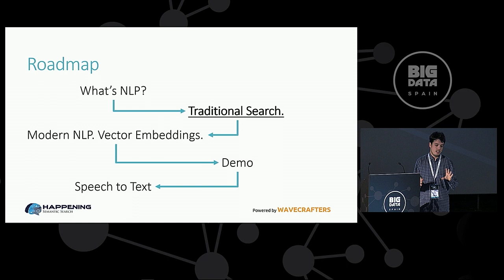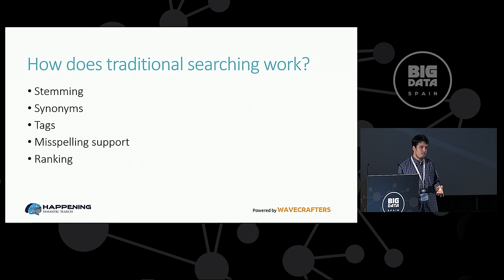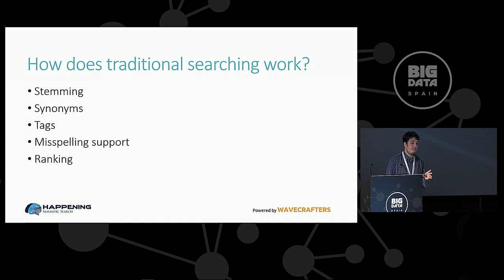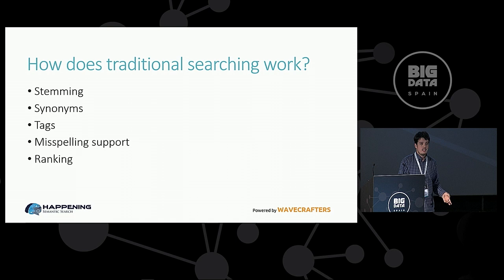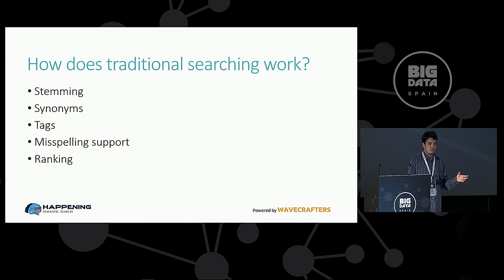Now we are going to center on one of those use cases, which is searching in a database. Right now, searching is like an eight-year-old — they can distinguish words but they don't know what they mean. They do some tricks to palliate that, for example they use stemming, which means that 'buying' and 'buy' are interpreted as the same word. They sometimes use synonym dictionaries, they do tagging in order to speed the search, because searching in long pieces of text is really slow. They usually have misspelling support, and they do page ranking.